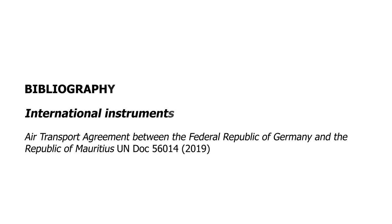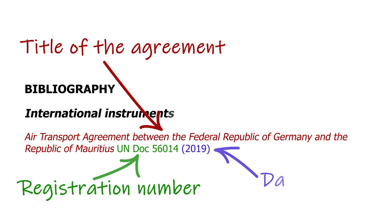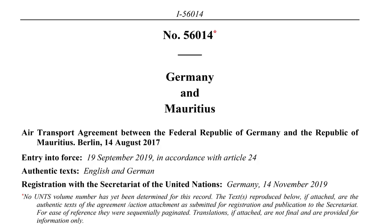They need to be filed in alphabetical order according to the title of the agreement. Because of the wide variety of such instruments, there isn't a fixed pattern in which the source type can be cited. Mainly the title of the agreement, the registration number or document number if available, and the date are required in the reference entry. For well-known international law instruments, the citation style of the South African Journal on Human Rights is used.